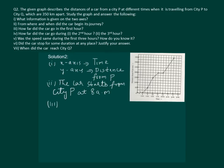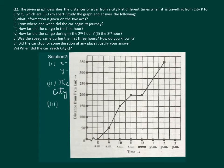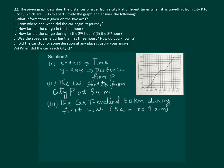The third part of our question asks: how far did the car go in the first hour? From the graph, we know that he started at 8 a.m., so the first hour of travel would be from 8 to 9 a.m. At 9 a.m., he is at 50 kilometers. That means he traveled 50 kilometers in the first hour. Hence the answer: the car traveled 50 kilometers during the first hour, that is 8 a.m. to 9 a.m.